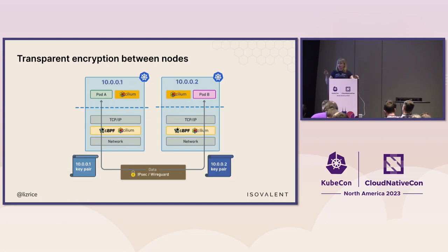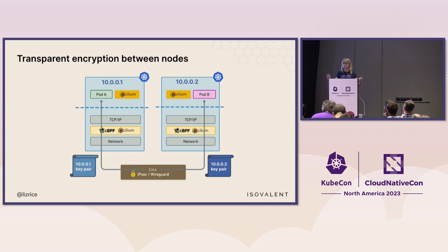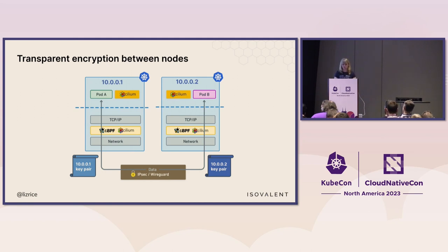The identities — or rather the certificates — used for authentication and key exchange represent the nodes rather than the individual workloads. But if you don't trust your node identities, you may have other issues. If you think your nodes have been compromised, you probably don't want to be running workloads on those nodes anyway. So for many circumstances, transparent encryption ticks the box people need for their encryption requirement within their cluster.